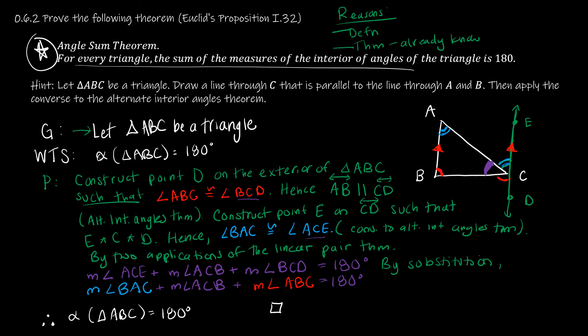Therefore, the sum of the measures of the interior angles of the triangle is equal to 180 degrees — which is what I needed to prove. You can write 'therefore,' use a box at the end, write QED, or something similar. Make sure that at the end you have a reason for every statement — a definition, a theorem, or a mathematical construct already proven — and that you arrive at whatever you were supposed to show.